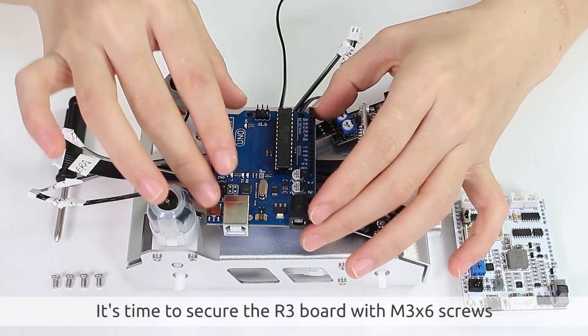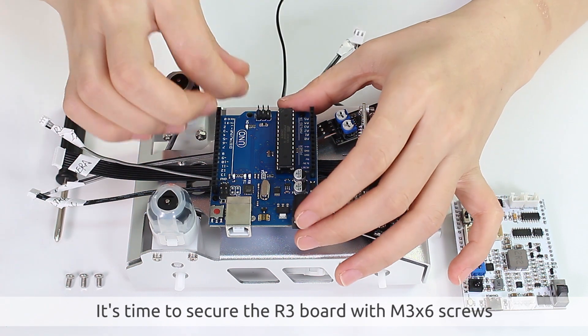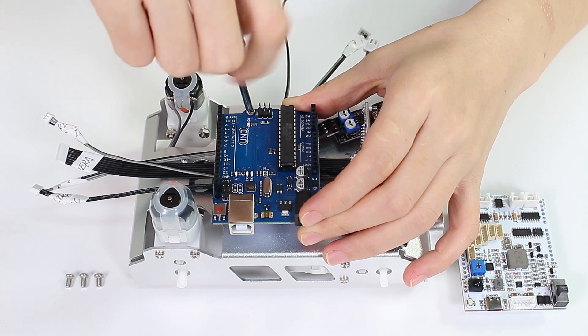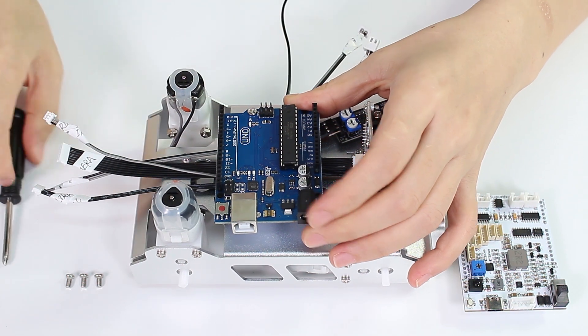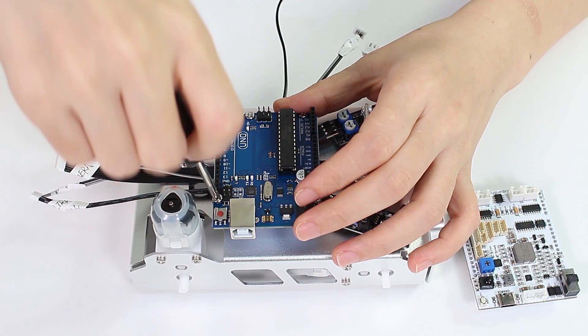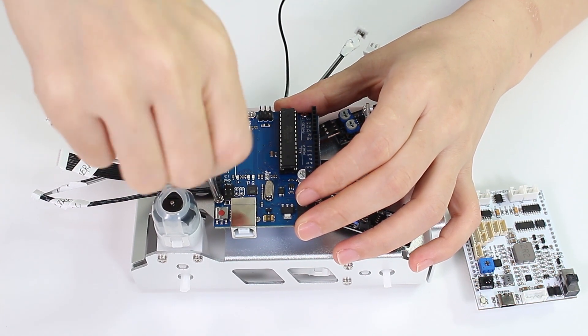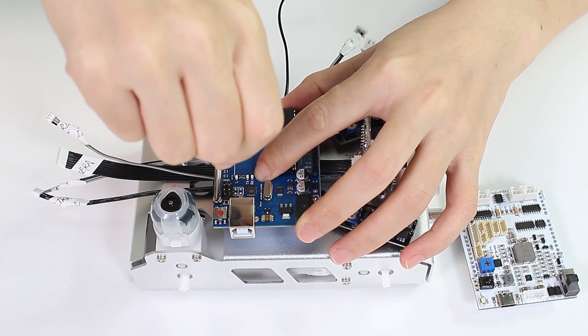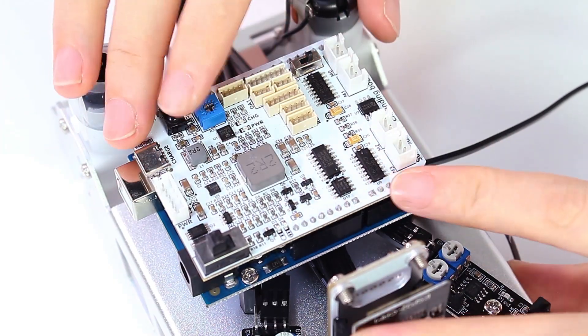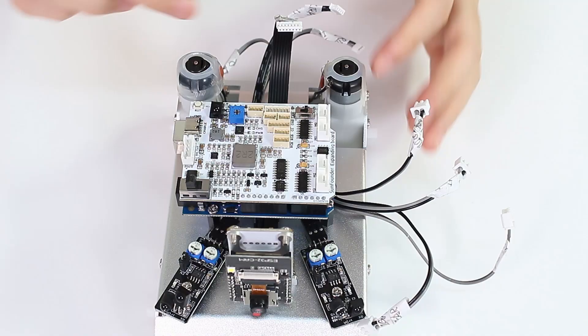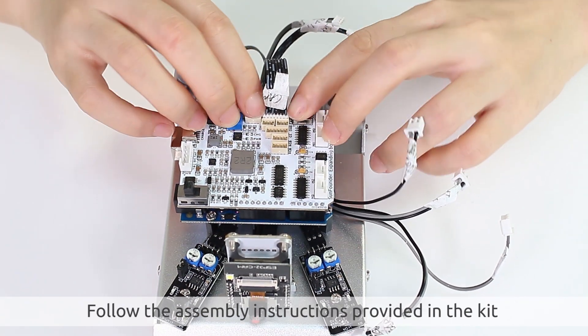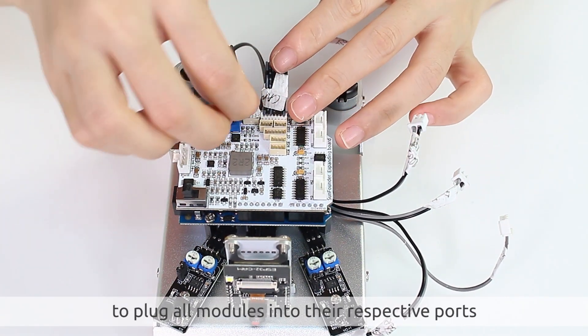It's time to secure the R3 board with M3 x 6 screws. After that, plug in the Zeus car shield. Follow the assembly instructions provided in the kit to plug all modules into their respective ports.